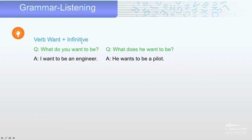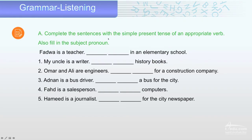The verb 'want' with the infinitive. For example: 'What do you want to be?' — 'to be' is the infinitive. 'What does he want to be?' 'I want to be an engineer.' 'He wants to be a pilot.' Now, with the exercise, complete the sentences with the simple present tense.